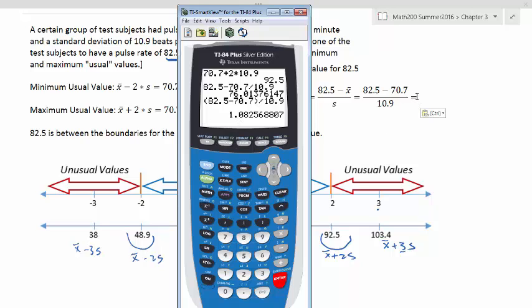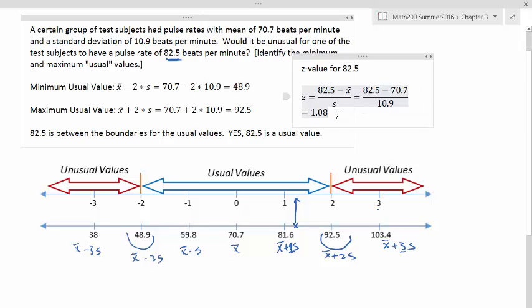So that 1.08 is going to be the z-score that describes how far away your value, that's 82.5, how far away your value is from the mean. And you're a little bit over one standard deviation away from the mean. And this number line also clearly shows that.